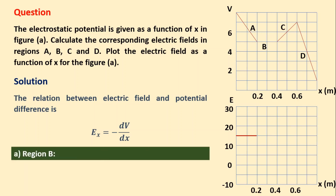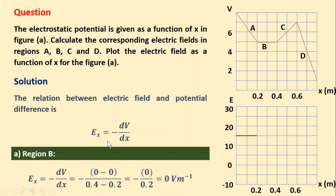Let us work out the electric field in region B. In region B, the voltage remains constant, so the change in voltage equals 0. Therefore dV is 0, and 0 divided by anything is 0. So the electric field between 0.2 meters and 0.4 meters is 0 volts per meter, represented in the E versus x graph. There is a flip from 15 volts per meter to 0 volts per meter.